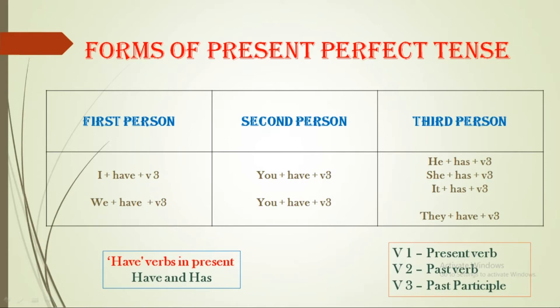Present perfect tense structure: I + have + V3, we + have + V3, you + have + V3 (both singular and plural you use 'have'), they + have + V3. For third person singular: he + has + V3, she + has + V3, it + has + V3. If the subject is 'you', we always use the auxiliary 'have'.